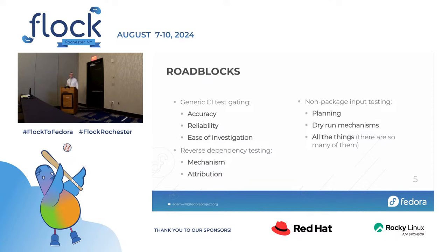Those are the reasons we haven't turned on test gating for the generic CI tests. For reverse dependency testing, it's much less developed — we simply don't have a reverse dependency testing mechanism; it doesn't exist and we have to build one. Attribution is also a challenge: when you do reverse dep testing, you have to communicate clearly that 'package A changed, so we ran package B's tests,' and that information has to reach the right people in a usable form. For non-package input testing, we have to identify all the inputs and then plan how to test them — a lot of open questions there.